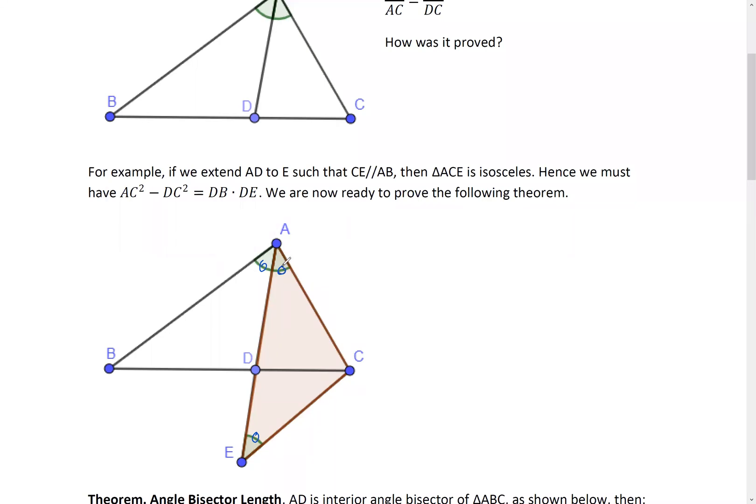So you have this angle, you call this one isosceles triangle. Triangle ACE is isosceles.